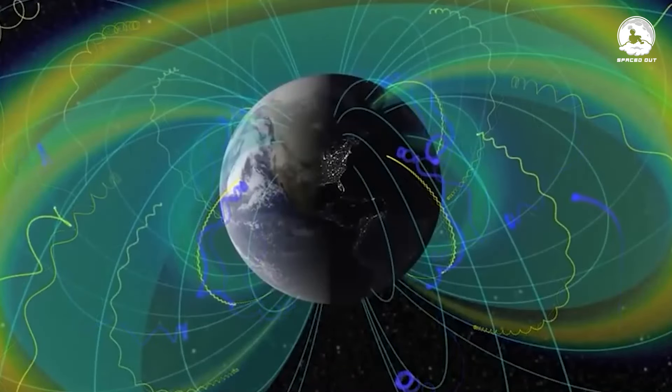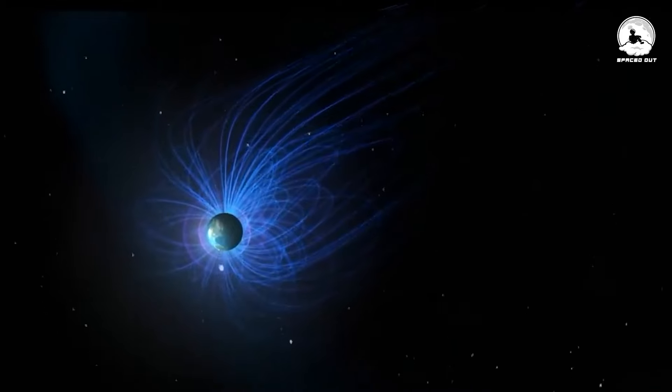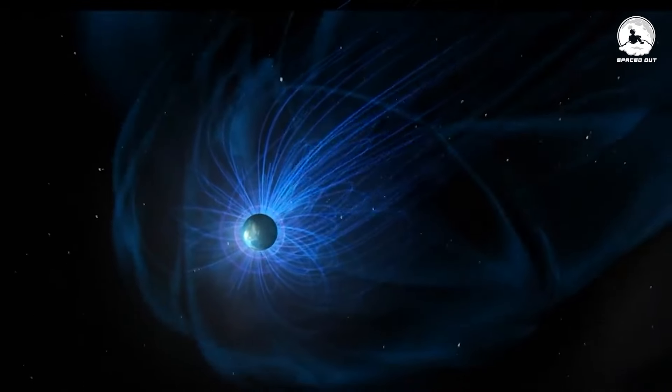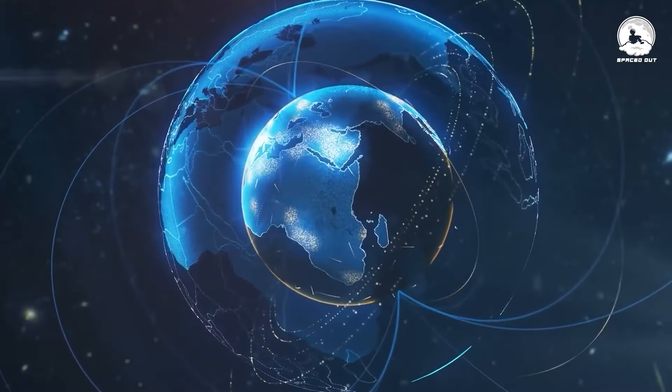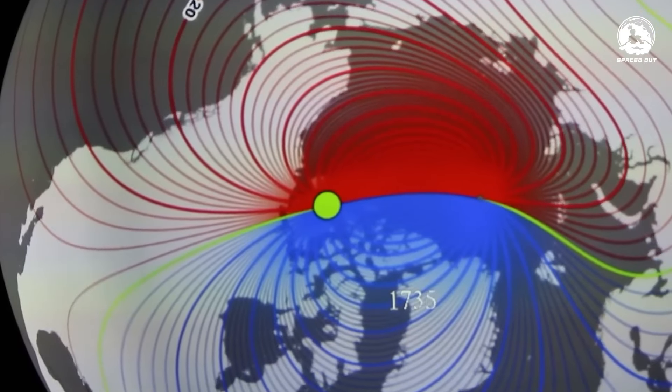Over time, the multiple poles diminish, leaving the Earth with a single dominant magnetic North and South pole, but in the opposite orientation to the pre-reversal configuration. The gradual transition results in a re-established yet inverted magnetic field configuration on the planet.